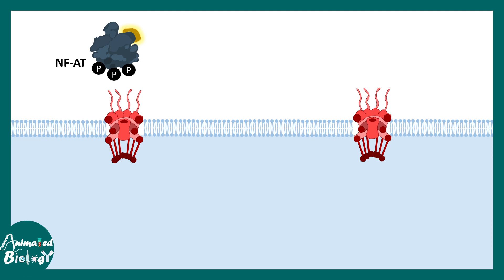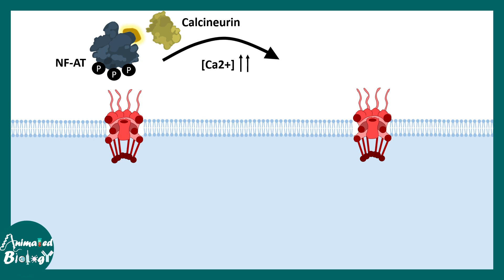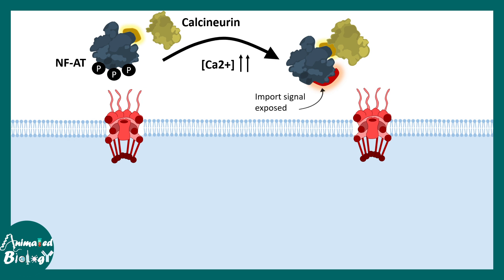Let's take a specific example. NFAT is a transcription factor that is hyperphosphorylated and stays in the cytoplasm. Calcineurin is a phosphatase enzyme that removes this phosphate group, exposing the nuclear localization signal (marked in red). A conformational change occurs upon dephosphorylation.